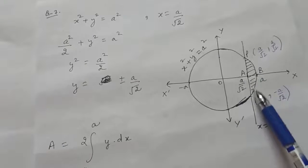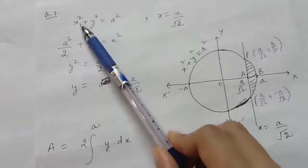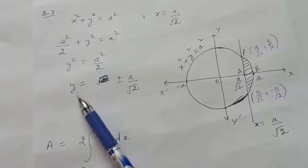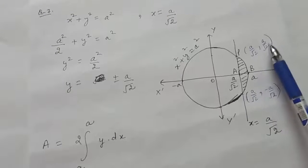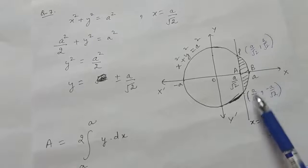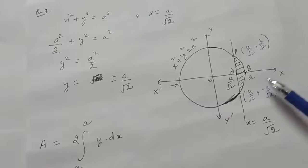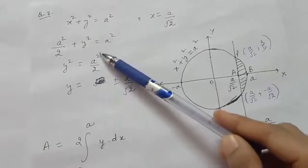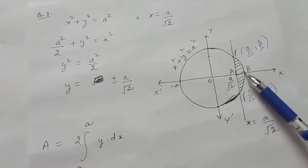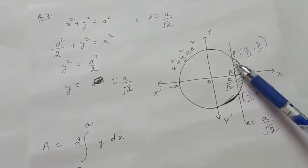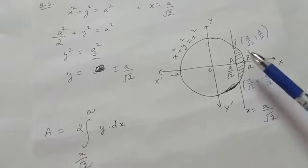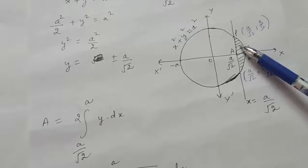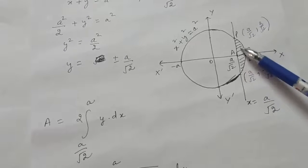Find the intersection points of the circle and the line. Substituting x² = a²/2 into the circle equation gives y = ±a/√2. So the intersection points are (a/√2, a/√2) and (a/√2, −a/√2). Finding these points is required if you use x-axis limits. Since the circle is symmetrical about the y-axis, the complete smaller portion is twice the area of region ABP.